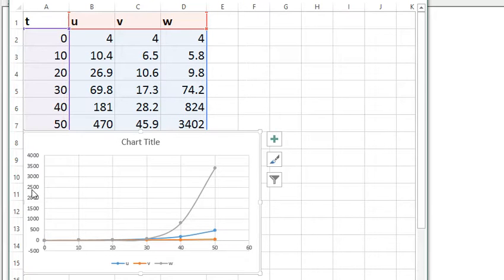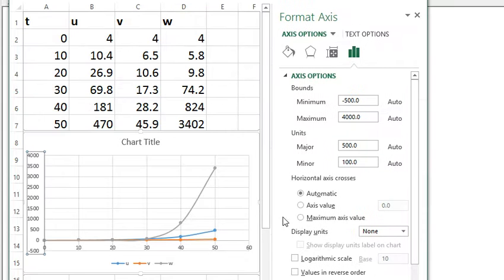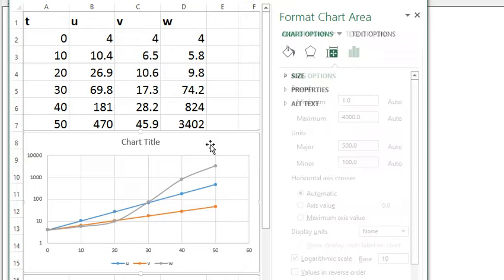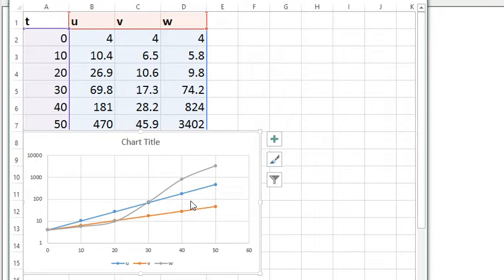But if we double-click the vertical scale and change to logarithmic scale, then suddenly the story's very different. Now what we're seeing is that u in the blue and v in the orange are indeed very close to straight lines. And so that means that the growth of the actual quantities, u and v, are very close to exponential. And w starts out at sort of one rate of growth and then goes way above u's rate of growth. Not a straight line at all, so not exponential growth. More complicated than exponential growth. So that answers that question.